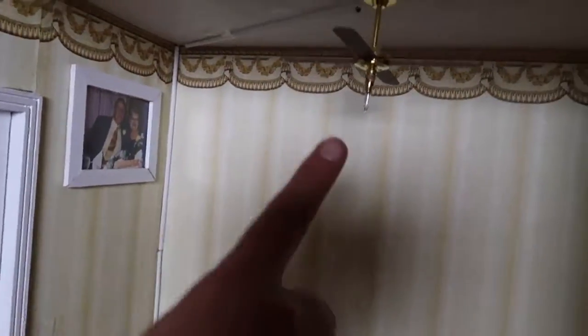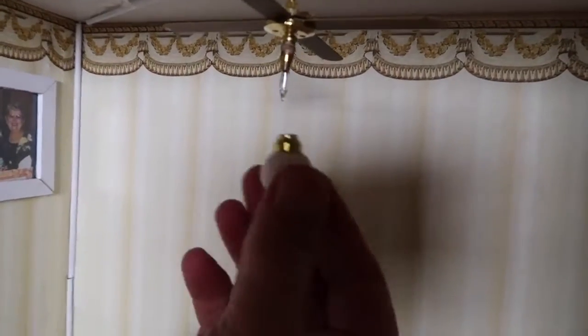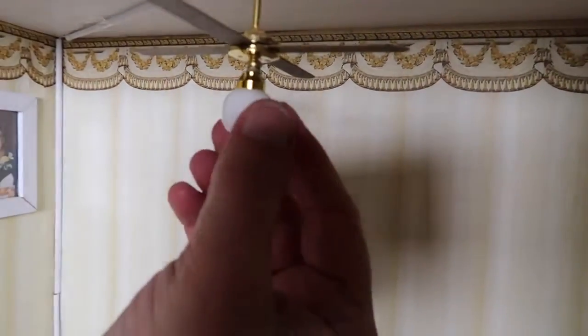So this wire is going up to the ceiling light. Okay, I did have to change the bulb, which is just a screw bulb. I'm going to put the globe back on, which again just screws on.